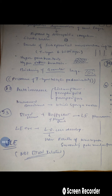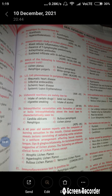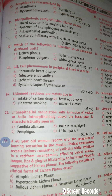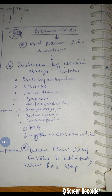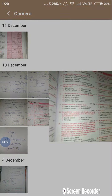Question 24 asks about lichenoid reactions. Lichenoid reactions are drug-induced reactions which exhibit histopathological features similar to lichen planus — that's why they are called oral lichen planus-like reactions. The histologic features are the same, but these are drug-induced. These drugs include antihypertensive drugs, methyldopa, penicillin, NSAIDs, ketoconazole, streptomycin, tetracycline, chloroquine, oral hypoglycemic agents, and sulfamethoxazole.